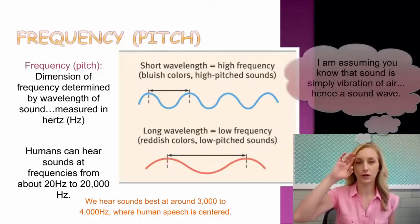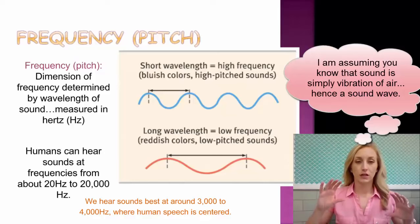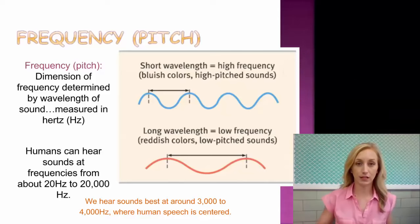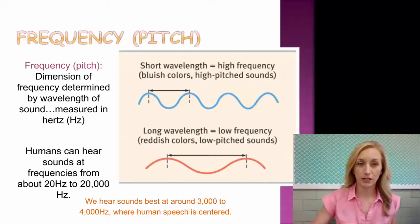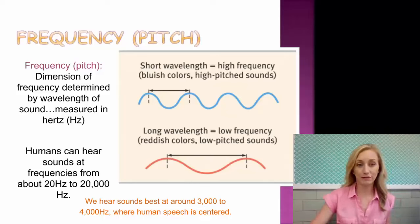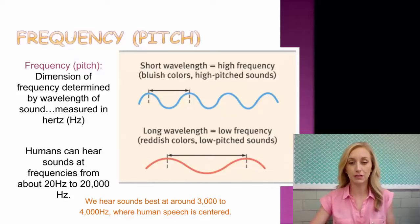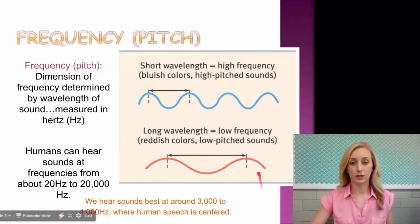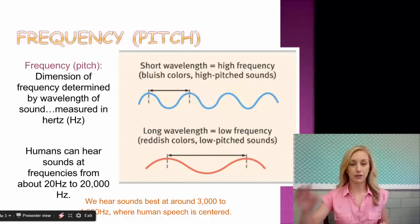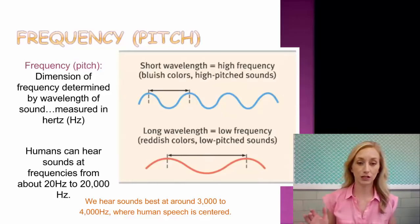This is a bit of a review from our vision notes about light waves. Light waves are very similar to sound waves. The frequency of a wave — the dimension determined by wavelength of sound — refers to how many waves you have in a given time, or how far apart each peak is. That gives you pitch. The higher the frequency, the higher the pitch; the lower the frequency, the lower the pitch. Humans can hear sounds at frequencies from about 20 hertz to 20,000 hertz, and we hear sounds best at about 3,000 to 4,000 hertz.